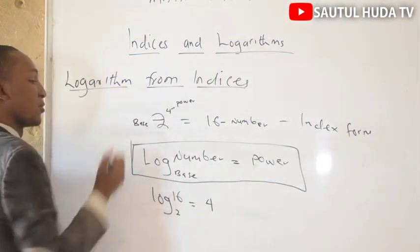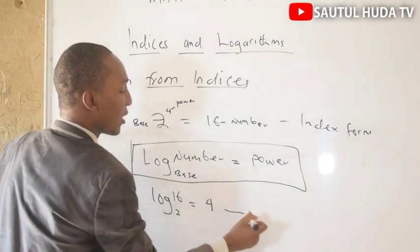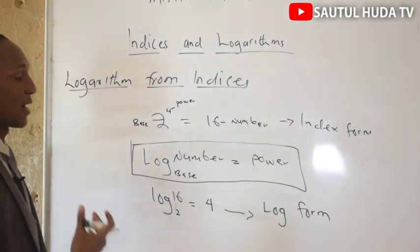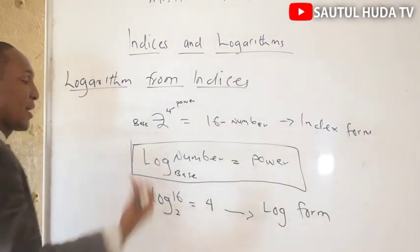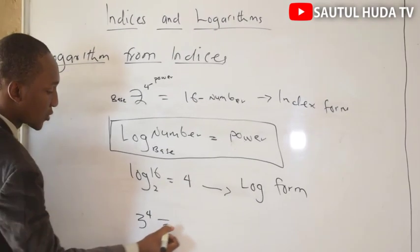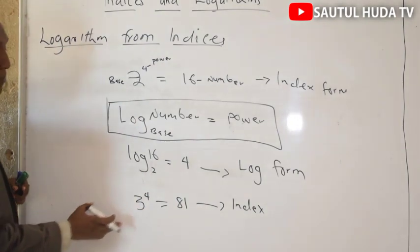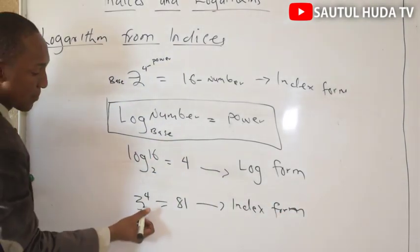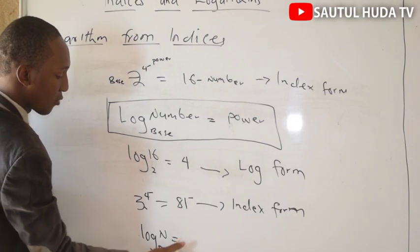The formula to use when converting from index form to logarithm form: from the index form you have number, so you write it as logarithm form. When you're converting index form to logarithm form, you can convert. For example, if we have 3 power 4 equals to 81, this is index form.